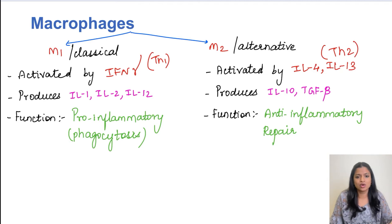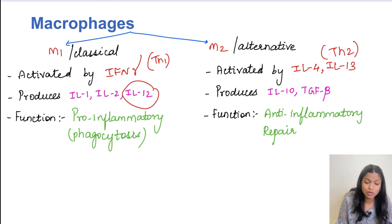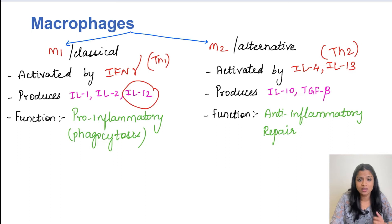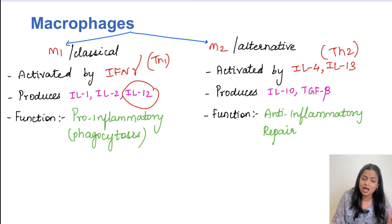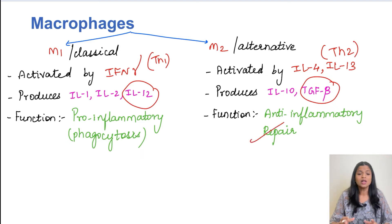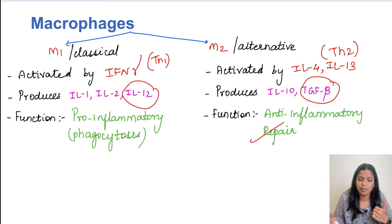When M1 macrophages are activated, they produce interleukin 1, interleukin 2, and interleukin 12. Interleukin 12 is very important as it activates lymphocytes, the other cells involved in chronic inflammation. M2 macrophages produce interleukin 10 and TGF beta, which are anti-inflammatory cytokines. TGF beta is responsible for fibrosis during repair. So M1 macrophages are pro-inflammatory with main function of phagocytosis, while M2 macrophages are anti-inflammatory with main function of repair.